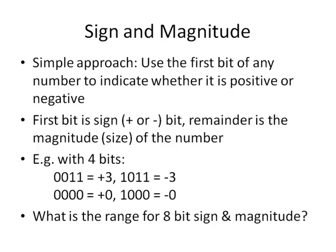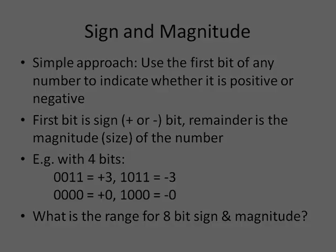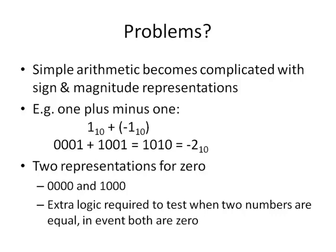We would also have a plus 0 and a minus 0 value. So the range for eight bits in sign and magnitude would be minus 127 to plus 127. You can test that out: 2 to the power of 7 is 128 minus 1, which is 127. Some problems with this: simple arithmetic becomes quite complicated with sign and magnitude representations. Using sign and magnitude, we can't easily feed numbers into a full adder circuit, for example, and get the right answer.